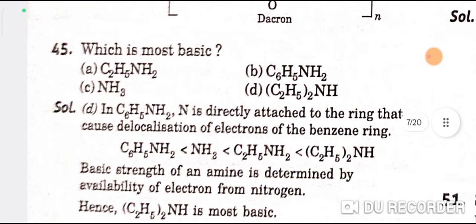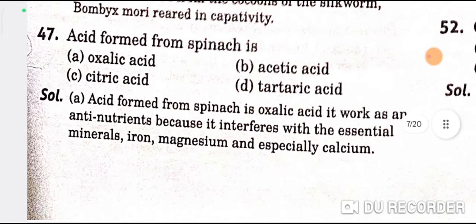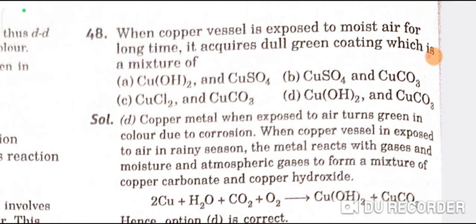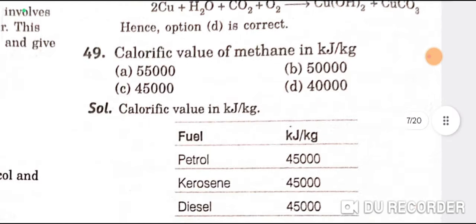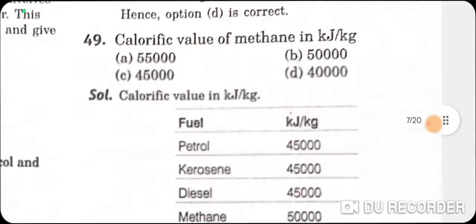Which is most basic? Correct option is D — (C2H5)2NH. Which one is an animal fiber? Silk — C is the correct option. The acid formed from spinach is oxalic acid — A is the correct option. When a copper vessel is exposed to moist air for a long time, it acquires a dull green coating which is a mixture of Cu(OH)2 and CuCO3 — D is the correct option.